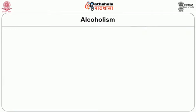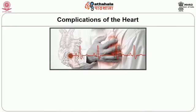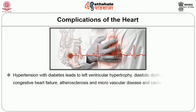Now let us move on to the clinical outcomes of diabetes with hypertension. Hypertension with diabetes mellitus is a strong risk factor for all clinical manifestations of atherosclerosis, heart failure, and peripheral arterial disease. Complications of the heart are commonly seen, and hypertension with diabetes leads to left ventricular hypertrophy, diastolic dysfunction, congestive heart failure, atherosclerosis, microvascular disease, and cardiac arrhythmia.